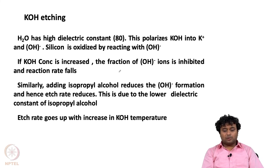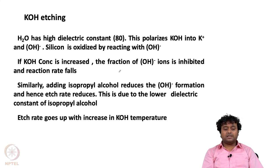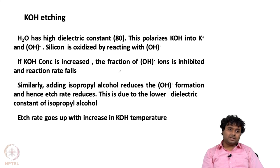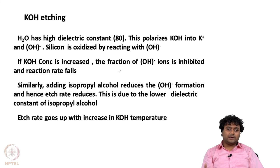We can add isopropyl alcohol, or IPA, which also reduces OH⁻ formation and hence the etch rate drops due to the lower dielectric constant of IPA. Another important point is that the etch rate goes up with increasing KOH solution temperature. So concentration, IPA addition, and temperature are all control parameters we can select to choose the desired etching rate.